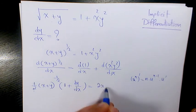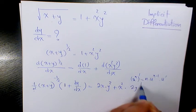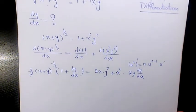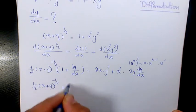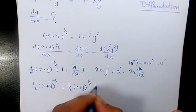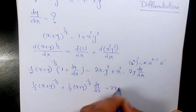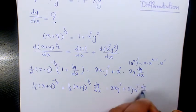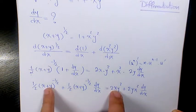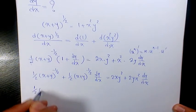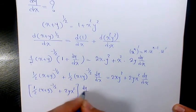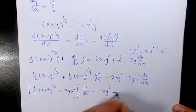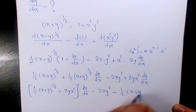Applying the product rule gives us 2x times y squared plus x squared times 2y dy over dx. So we have 1 over 2 x plus y to the power of negative 1 over 2, plus 1 over 2 x plus y to the power of negative 1 over 2 times dy over dx, equals 2xy squared plus 2yx squared dy over dx.